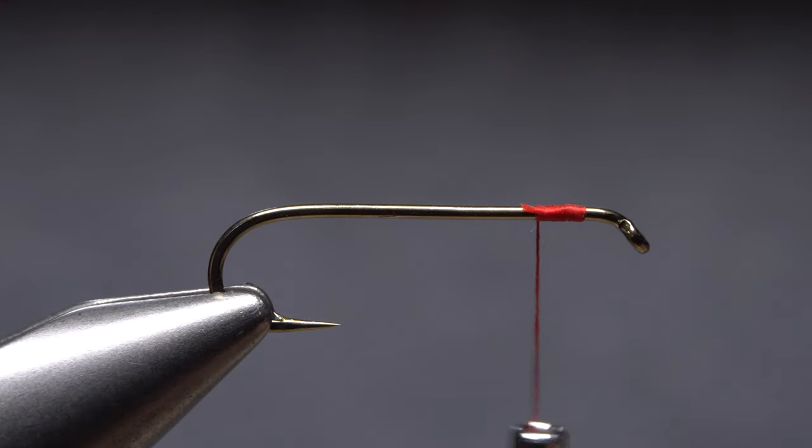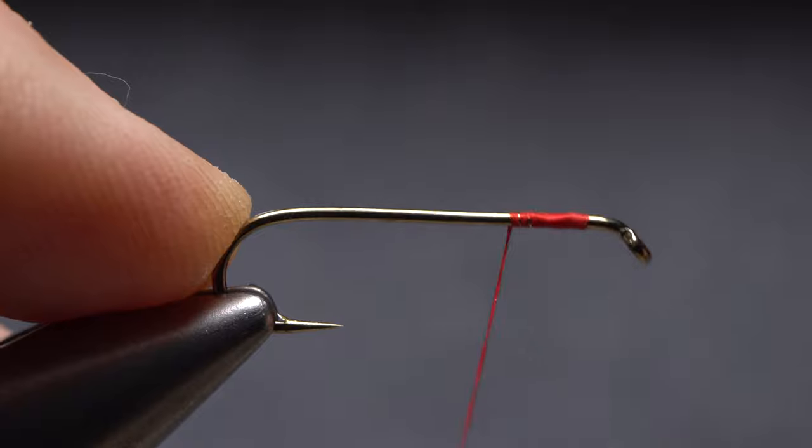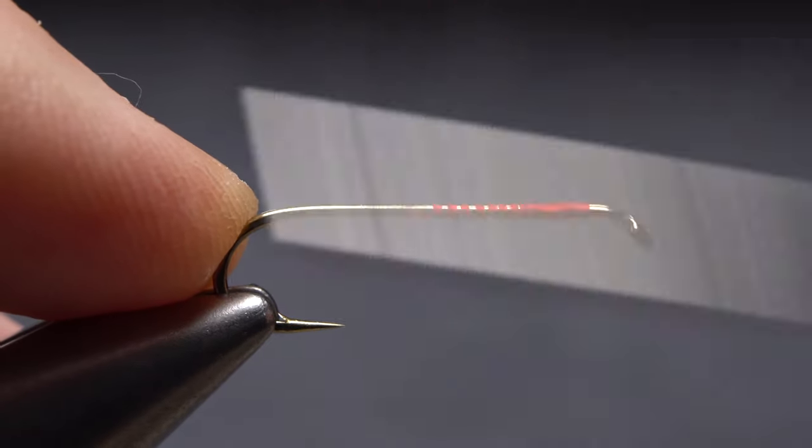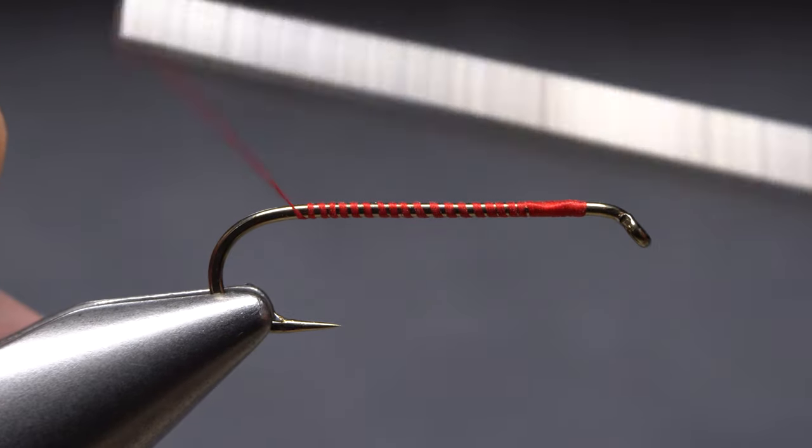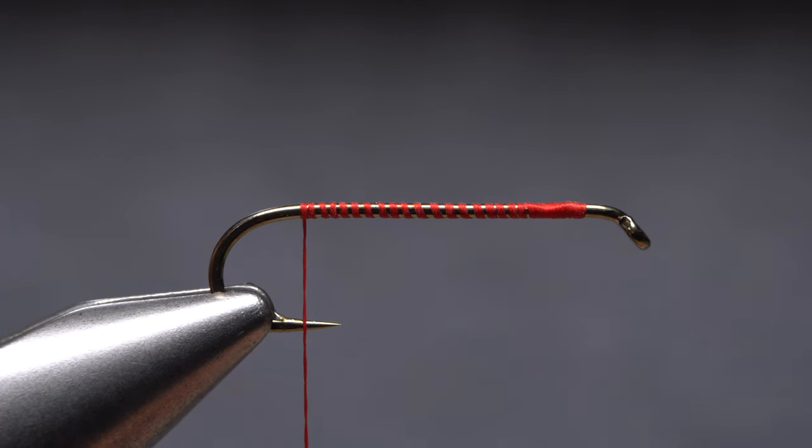Tying in mylar tubing to create a fly body isn't especially hard, but it can be a little fussy. I've found heavier thread, say 140 denier, works best at the rear tie-in location right at the hook bend.